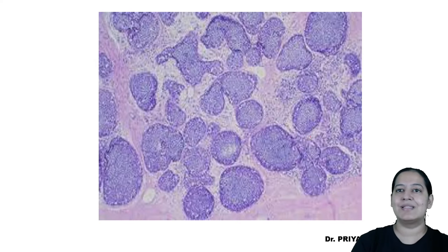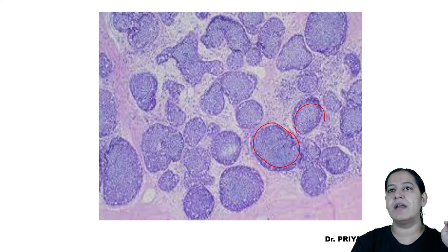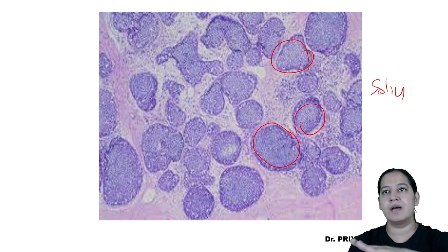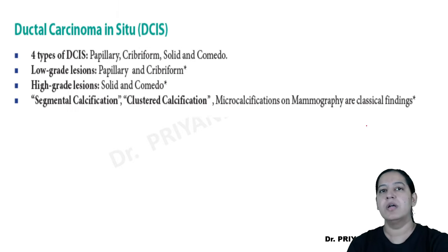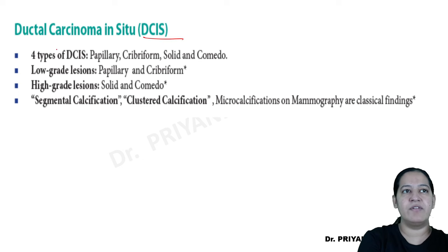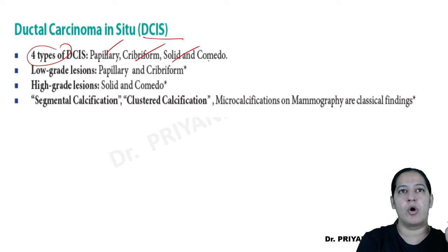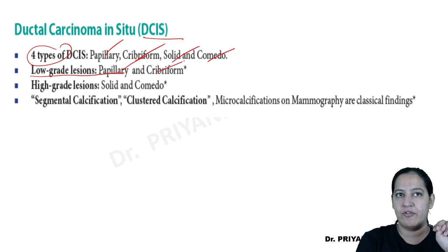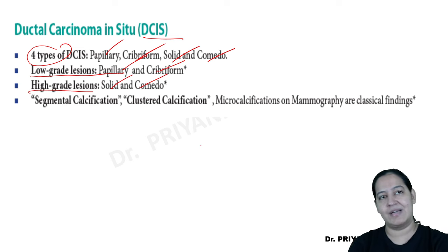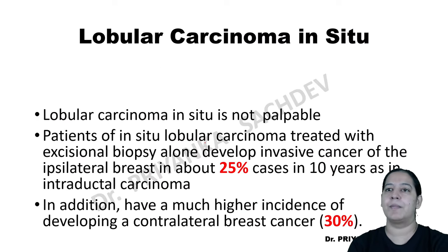In the diagram you can see multiple ducts showing solid pattern — mostly it is solid pattern. Multiple ducts, there is no invasion. The four types of DCIS are papillary, cribriform, solid, and comedo. Out of these, two are low grade — papillary and cribriform — and two are high grade — solid and comedo. That is the summary for DCIS.